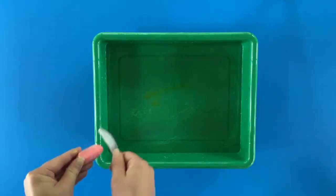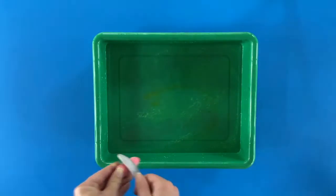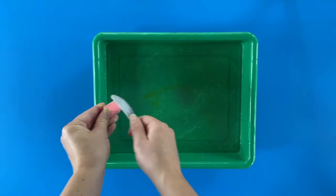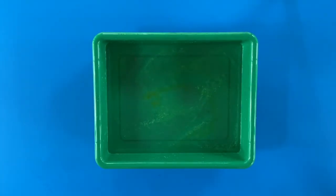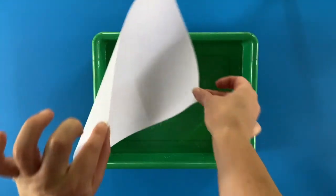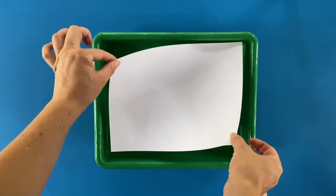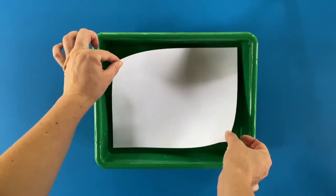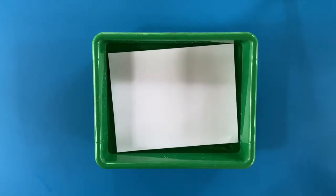If you have too much chalk or it scrapes in chunks that are too big, it will sink and not be useful for the project. When you are satisfied that you have a thin layer of chalk over the water, take your piece of paper and hold it by the two opposite corners. Slowly lower the paper onto the surface of the water and let go of the corners.